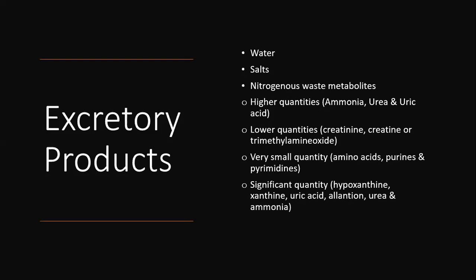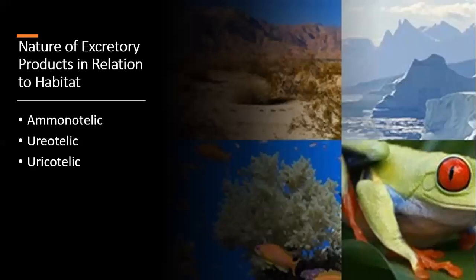These purines and pyrimidines undergo metabolic breakdown to produce hypoxanthine, xanthine, uric acid, allantoin, urea, and ammonia. These excretory products are produced in different animals. In every organism there are different excretory products. If we talk about nitrogenous waste, it depends on the habitat in which an organism is living. Some organisms excrete ammonia, some excrete urea, and some excrete uric acid. Organisms that excrete ammonia are called ammonotelic, those that excrete urea are called ureotelic.